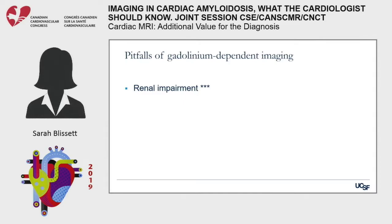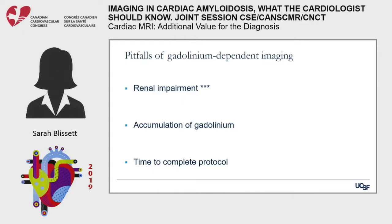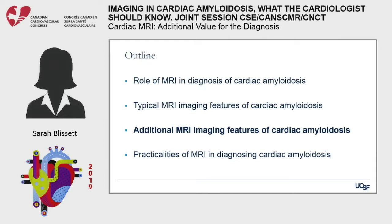Pitfalls of using gadolinium: earlier agents carried a risk of nephrogenic systemic fibrosis in patients with EGFR less than 30 or on dialysis. With newer agents this is evolving — locally at UCSF, as long as the patient does not have AKI, even if on dialysis or EGFR less than 30, new gadolinium agents are administered, but this is site-dependent. There are also concerns about long-term accumulation of gadolinium in bone and brain of unclear clinical significance. Are there additional MRI features for centers not administering gadolinium to patients with renal dysfunction?